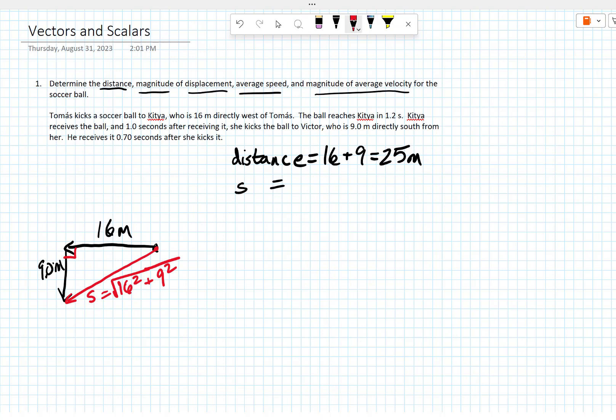We'll plug that into a calculator. Our displacement ends up being, it has a magnitude, the magnitude of the displacement, so I'll draw it in these magnitude absolute value lines, is equal to 18.4 meters.